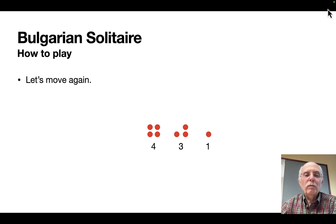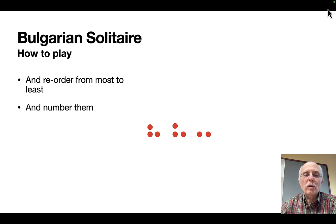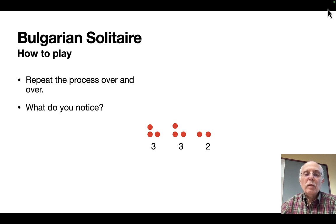Now for the next move, we're going to do the same thing. We're going to take one coin from each pile, make a new pile, and then reorder them from the most tokens to the least. We repeat the process over and over again until you start noticing patterns. What do you notice? What happens?